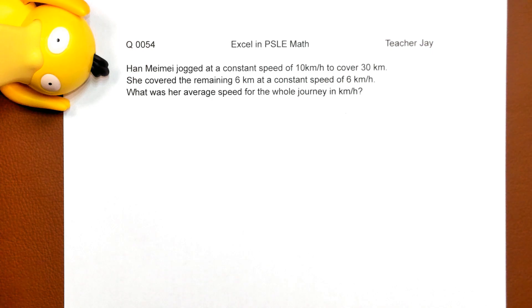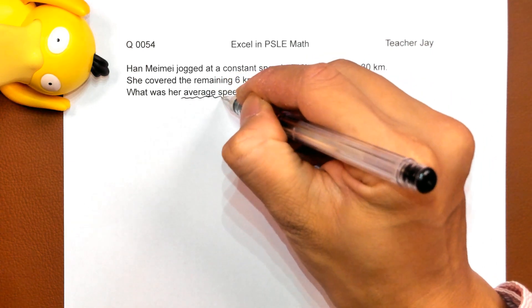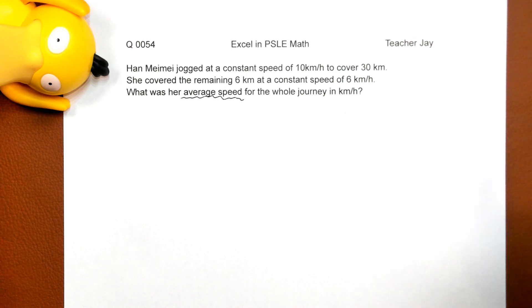然后她就把剩下的跑完了。然后呢,她问, what was her average speed? 平均速度 for the whole journey in kilometers per hour.